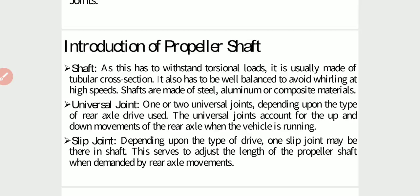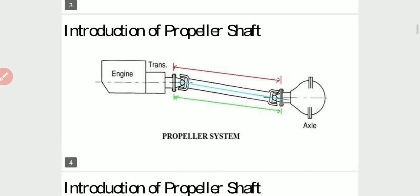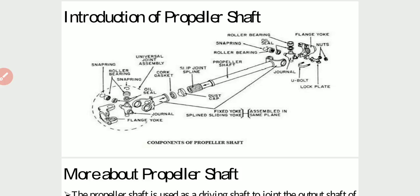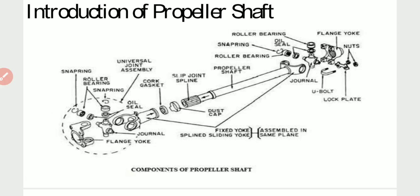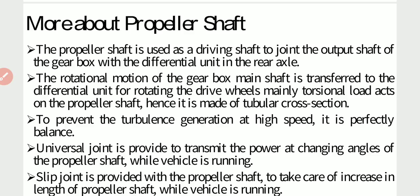A slip joint may be used in the propeller shaft depending on the type of drive. It serves to adjust the length of the propeller shaft as demanded by rear axle movements. This is the diagram of the propeller shaft. The propeller shaft is used as a driving shaft to join the output shaft of the gearbox with the differential unit in the rear axle.